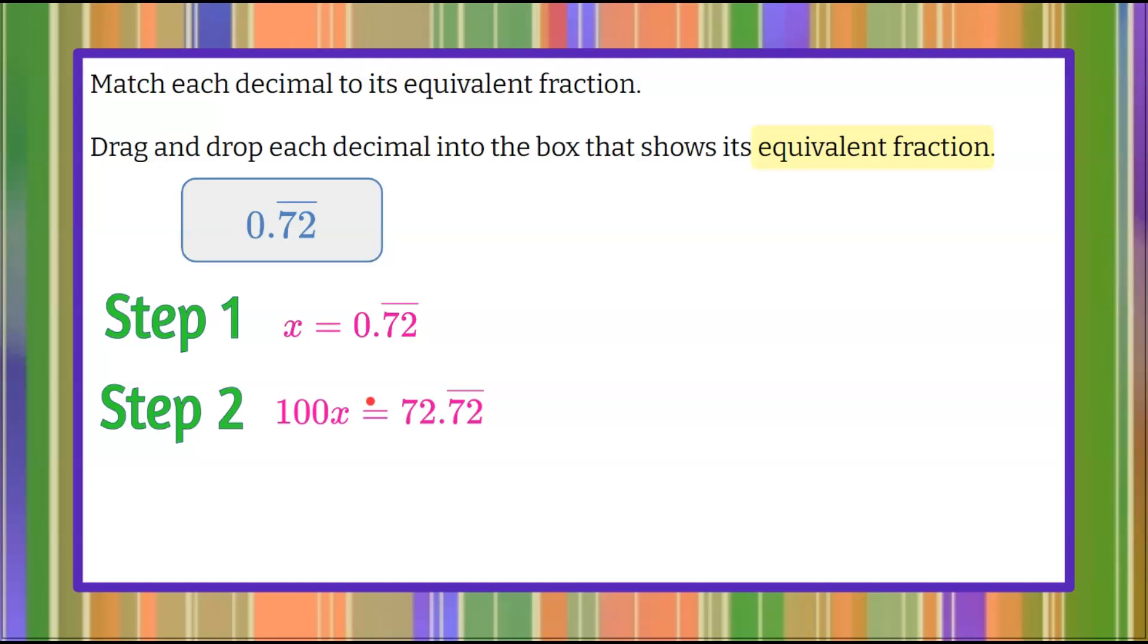Remember, from our laws, our properties of algebra, whatever I do to one side of an algebraic equation, I must do to the other, and then it remains equal. So we're keeping our equality by doing the same to both sides. So I haven't broken any rules here. So now I'm going to use what I've learned in systems of equations, and I'm going to subtract the first one from the second. So 100x equals 72.72 repeating. I'm going to subtract x equals 0.72 repeating, our original repeating decimal.